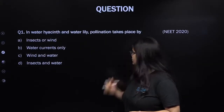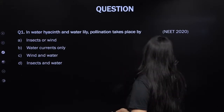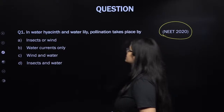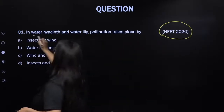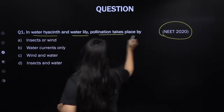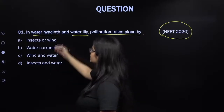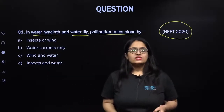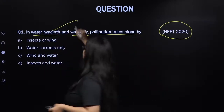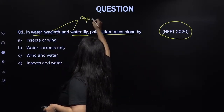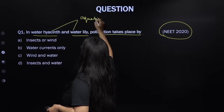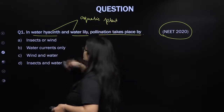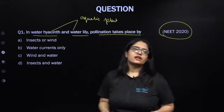The very first question was asked in NEET 2021. In water hyacinth and water lily — these are two important aquatic plants — pollination takes place by which agent? NTA is asking: in such aquatic plants like water hyacinth and water lily, which of the following is used as the pollinating agent?